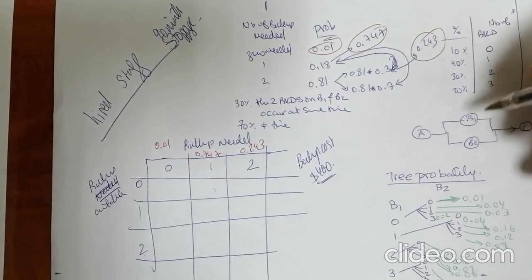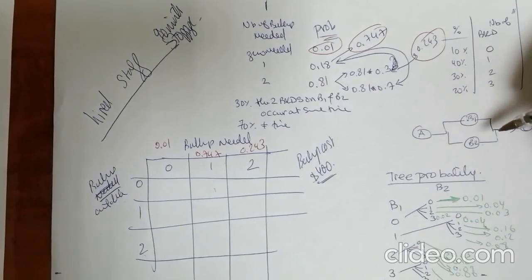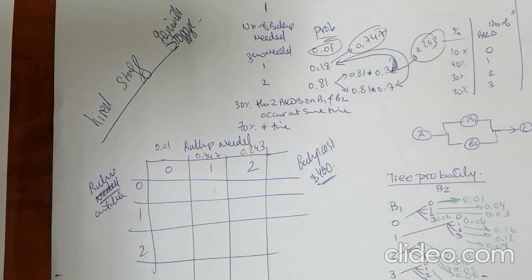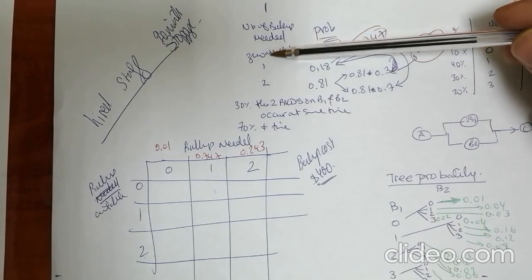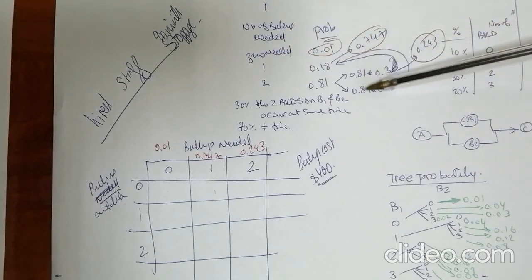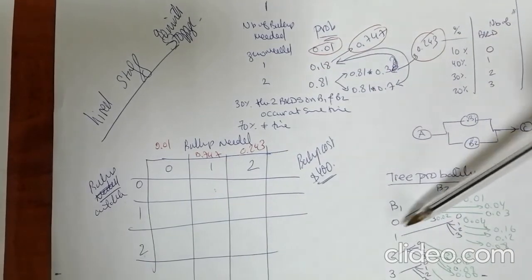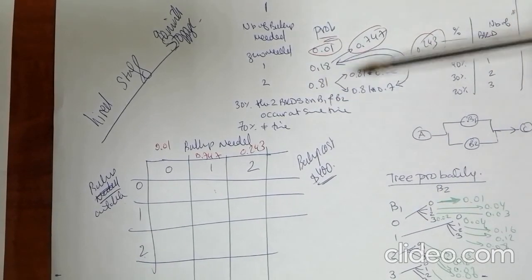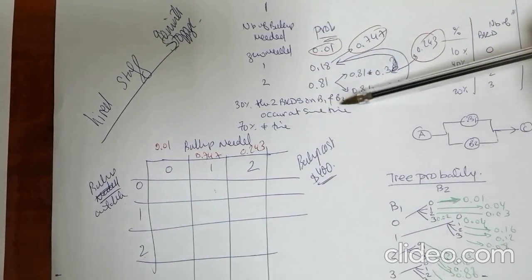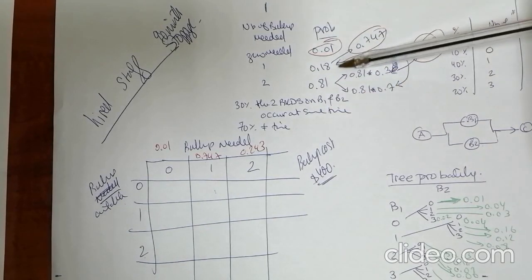We only need two backup systems if both machines break down at the same time. Using the decision tree with probabilities — zero needed at 0.01, one needed at 0.747, two needed at 0.243 — we determined that 30% of two-breakdown cases occur simultaneously and 70% occur at different times. Multiplying 70% by 0.81 and adding to the one-backup-system probability gives us the final updated values for our decision analysis.